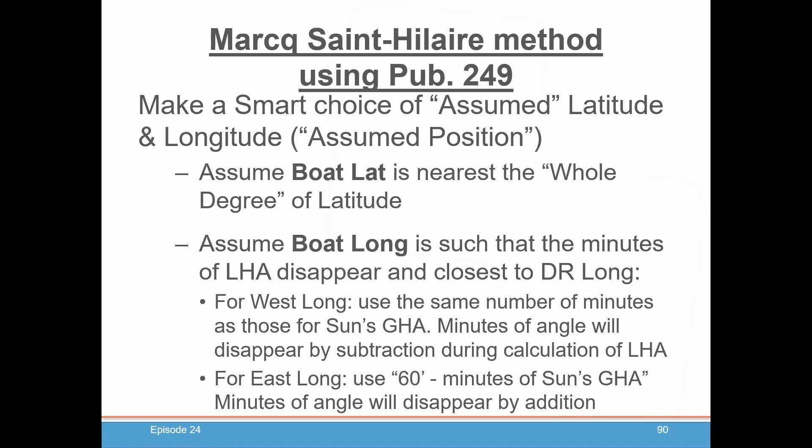If you're in east longitude, it's a little more complicated. You need to make the minutes be 60 minutes minus the minutes of the sun's GHA. Because for east longitude, we're adding our longitude to the GHA to get LHA, and by doing that, the minutes of angle will become zero.